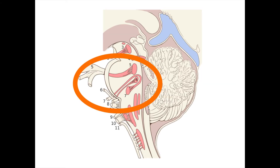Four more cranial nerves branch off of the pons: cranial nerve 5, the trigeminal nerve; 6, the abducens nerve; 7, the facial nerve; and 8, the vestibulocochlear nerve.